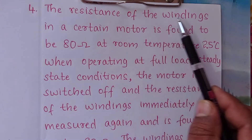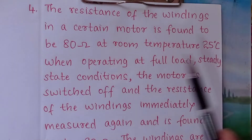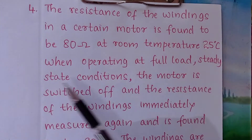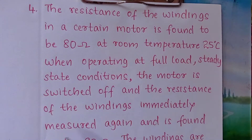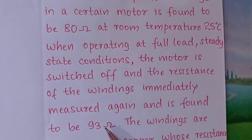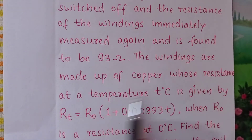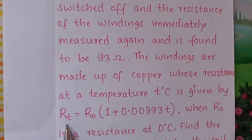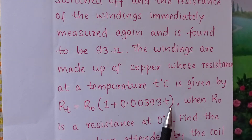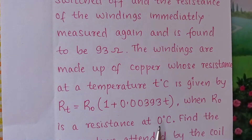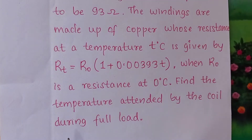The resistance of the windings in a certain motor is found to be 80 ohms at a room temperature of 25 degrees centigrade when operating at full load steady state conditions. The motor is switched off and the resistance of the windings is immediately measured again and found to be 93 ohms. The windings are made of copper whose resistance at temperature T degrees centigrade is given by Rt equals R0 into bracket 1 plus 0.00393T, where R0 is the resistance at 0 degrees centigrade. Find the temperature attained by the coil during full load.